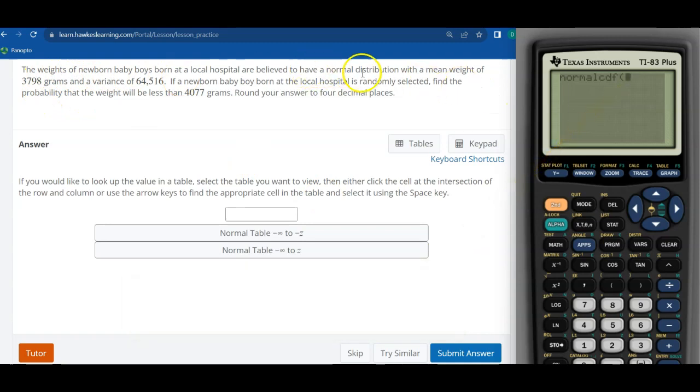So the weights, same thing as before, normally distributed. The mean is 3798, there's the variance. So less than 4077. So again, for less than, that means there is no lowest number. And the first thing I put in is the lower number.